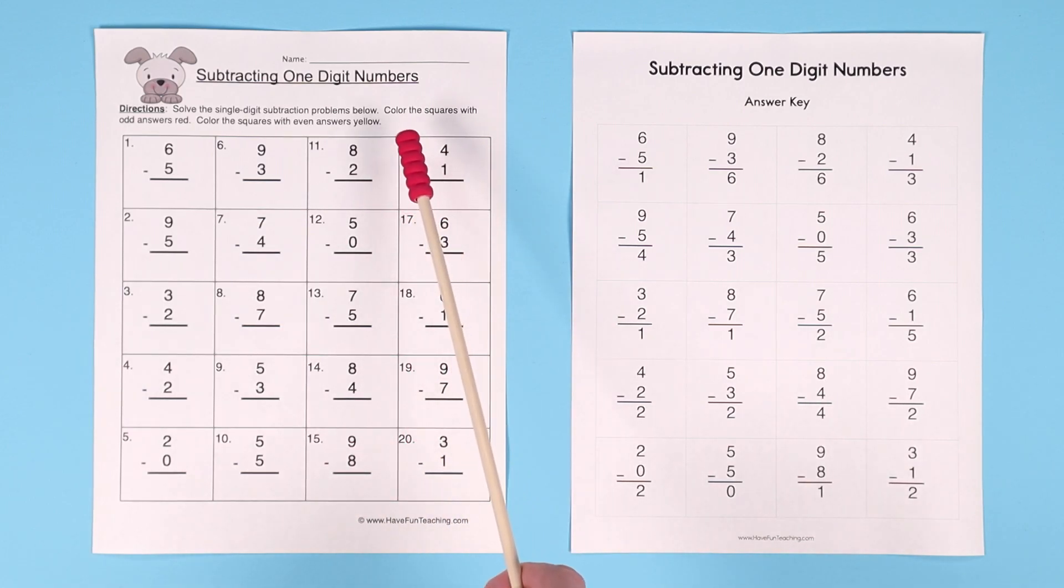you can have them color the squares with odd answers red. So, if the answer is odd, that would be 1, 3, 5, 7, 9, color them red.